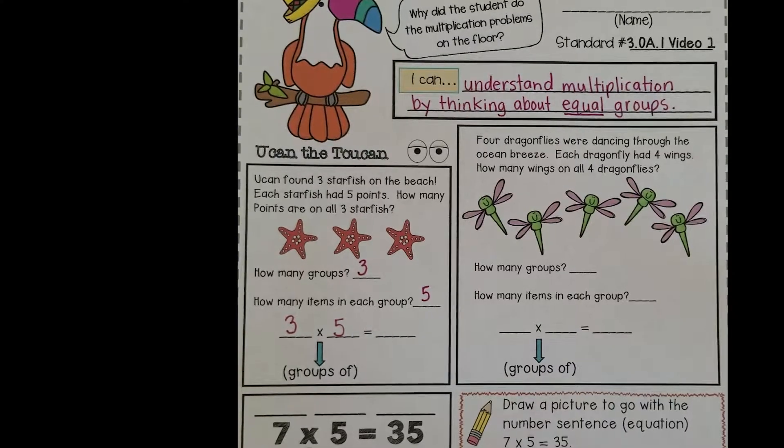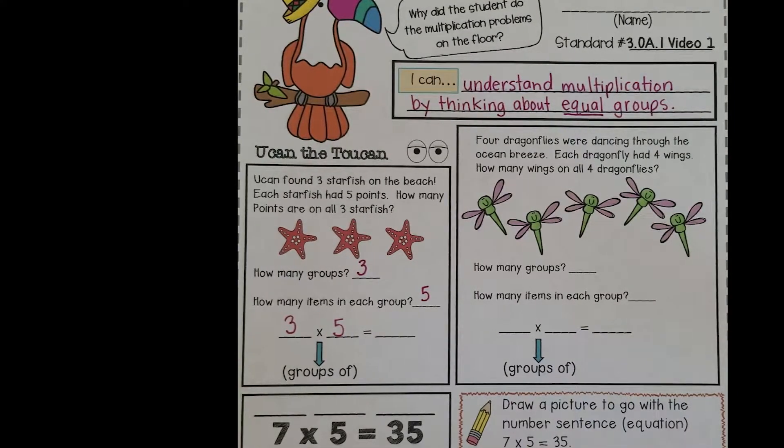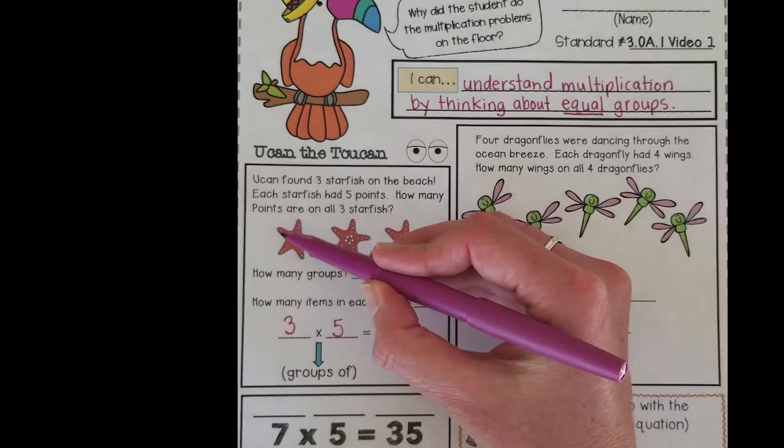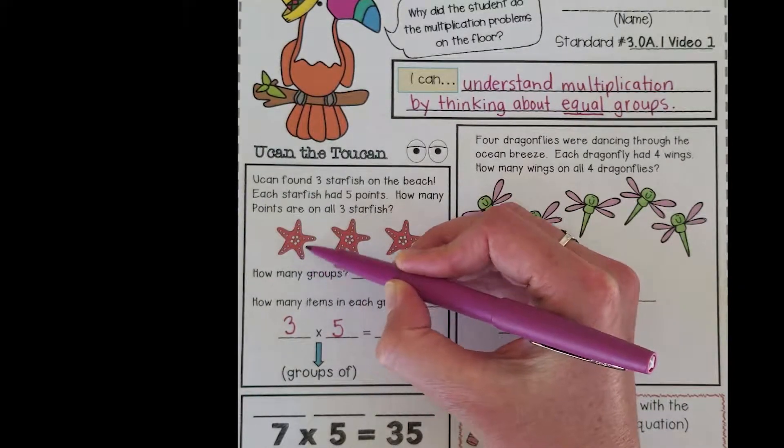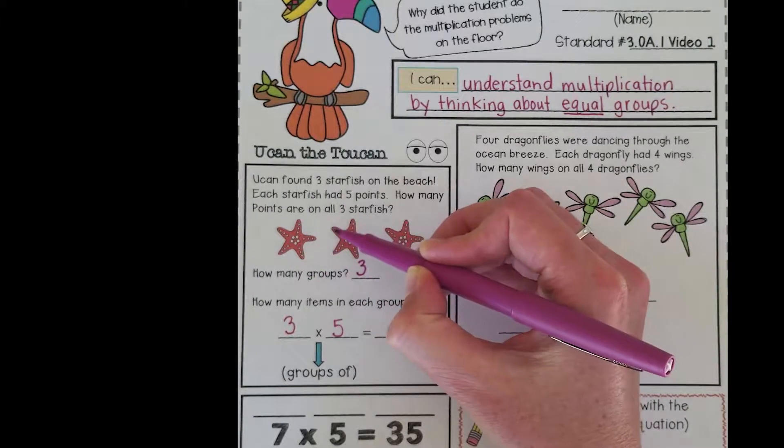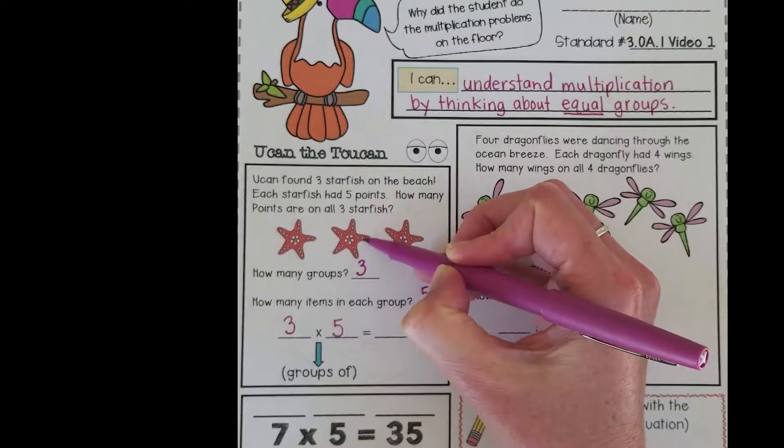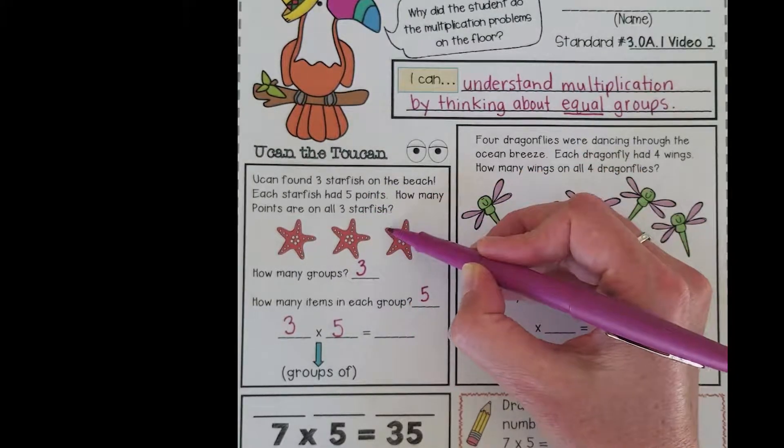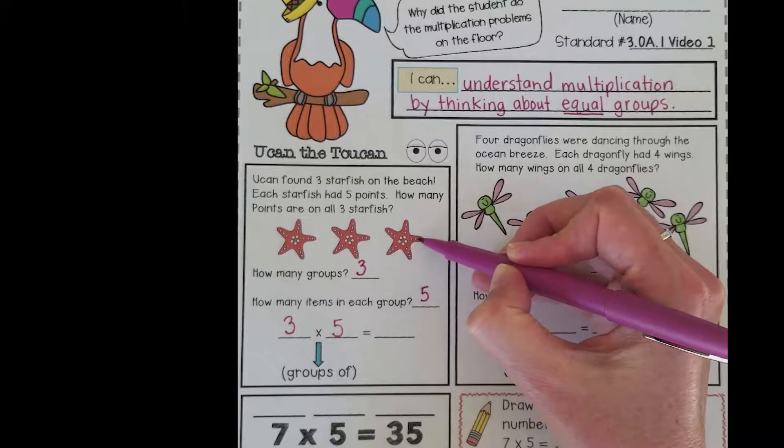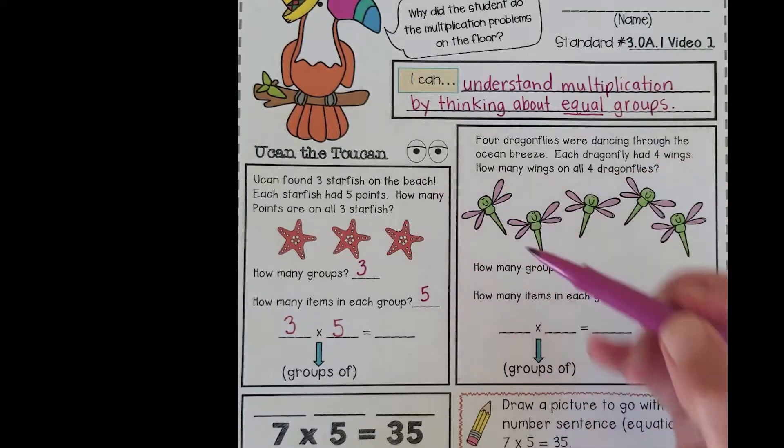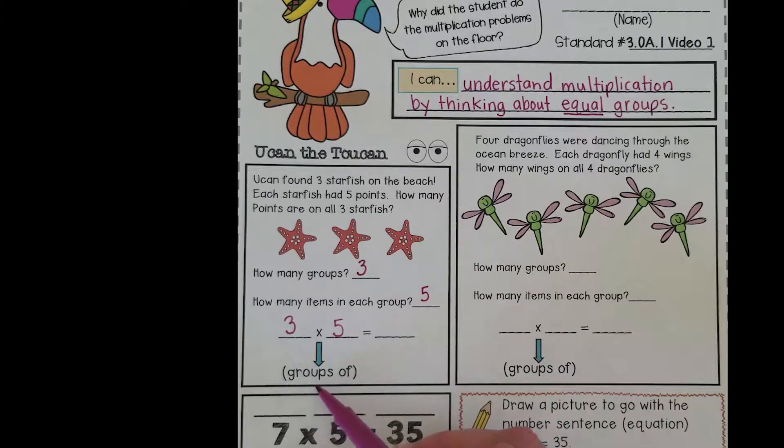One way I could figure out how many points I have all together is I could count: 1, 2, 3, 4, 5, 6, 7, 8, 9, 10, 11, 12, 13, 14, 15. So I know that three groups of five is going to give me 15.